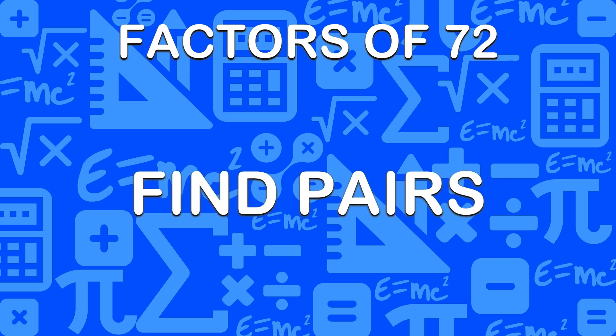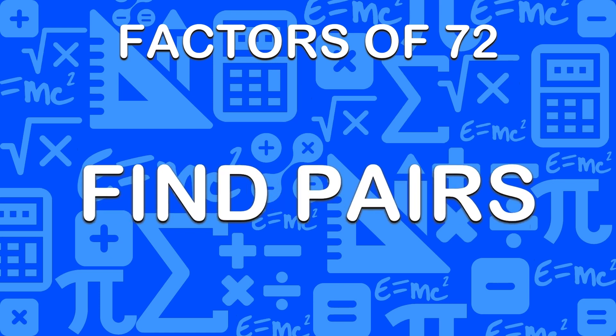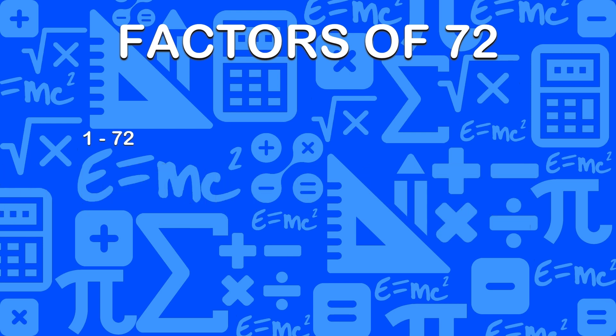Now, let's find pairs of factors of 72. Pairs are numbers that multiply to give 72. Here are pairs of factors of 72.